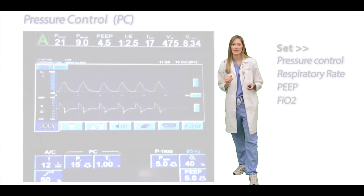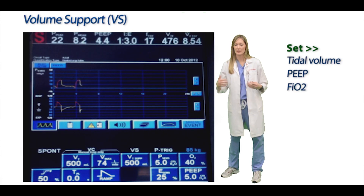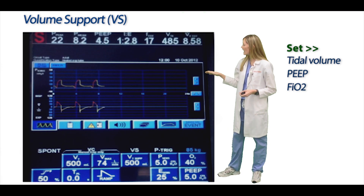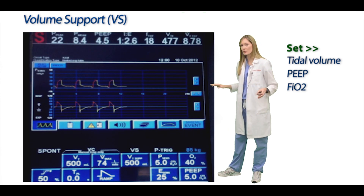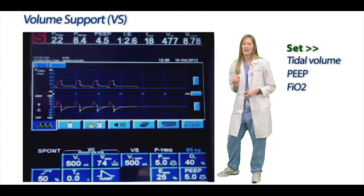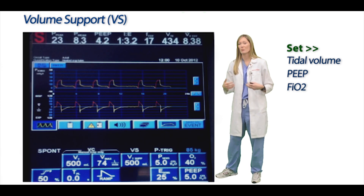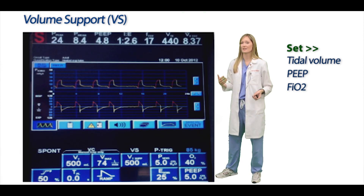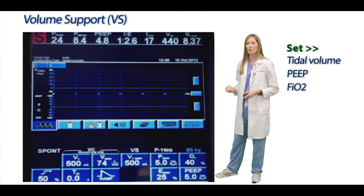Next is volume support. When a patient takes volume support breaths, the patient decides how many breaths to take — supported based on the tidal volume you set — but there is no set rate. The vent does have an apnea alarm built in, so if the patient stops breathing they'll still get breaths, but otherwise they can breathe as slow or as fast as they want. Because you've set volume, pressure is what varies.